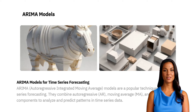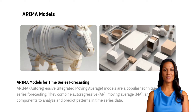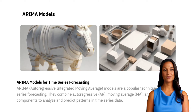An ARIMA model is a forecasting technique that uses past data points to predict future values in a time series. ARIMA stands for Autoregressive, Integrated, and Moving Average. An autoregressive component models the relationship between a current and past observations. An integrated component accounts for the differencing required to make the time series stationary. Finally, a moving average component models the relationship between a current observation and a residual error from a moving average model applied to past observations.